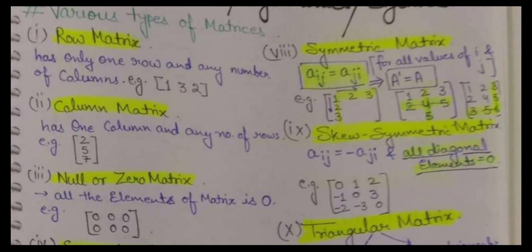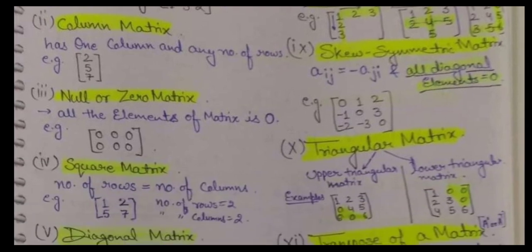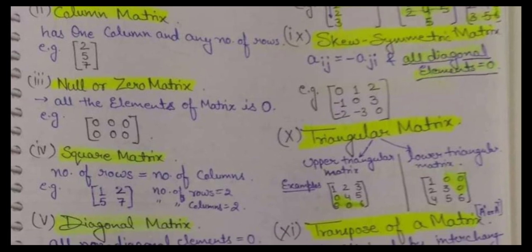Next is column matrix, in which the number of columns will be just 1. The number of rows can be any number — 2, 3, 4, 5, 100, any number of rows — but the number of columns should be only 1, and then we call it a column matrix. Next is null or zero matrix, which is a matrix in which all the elements will be equal to 0, as you can see in the example.